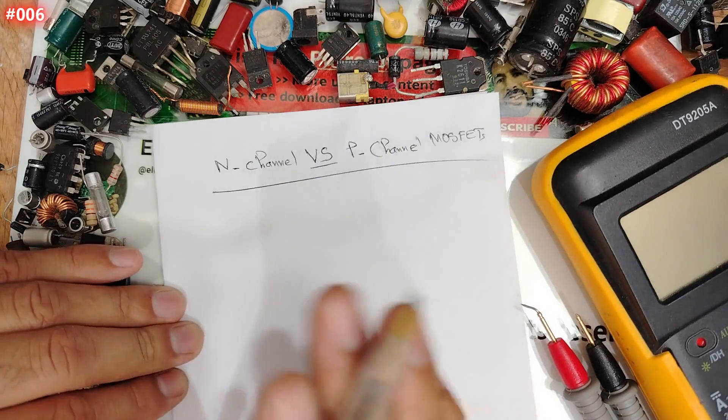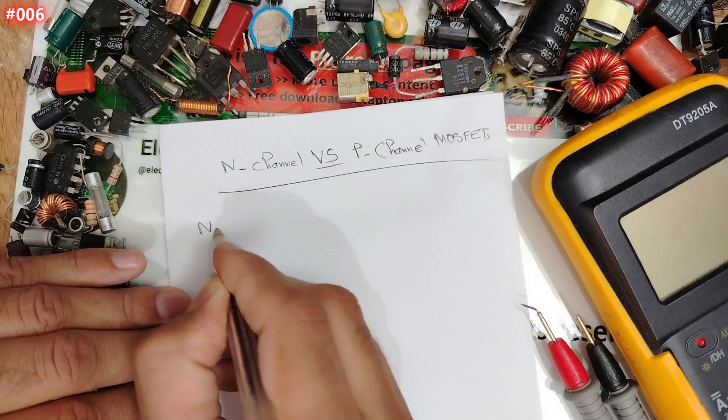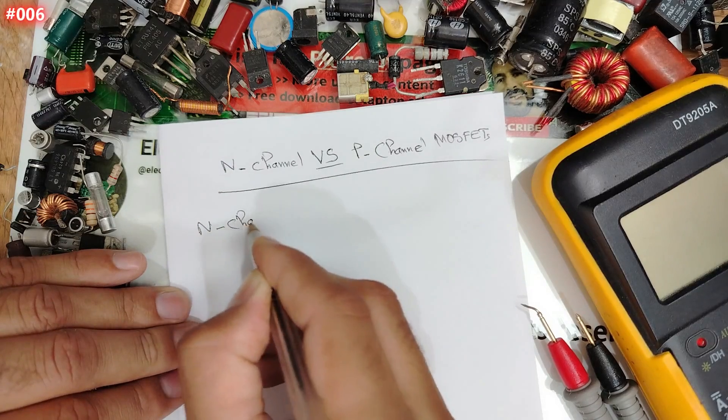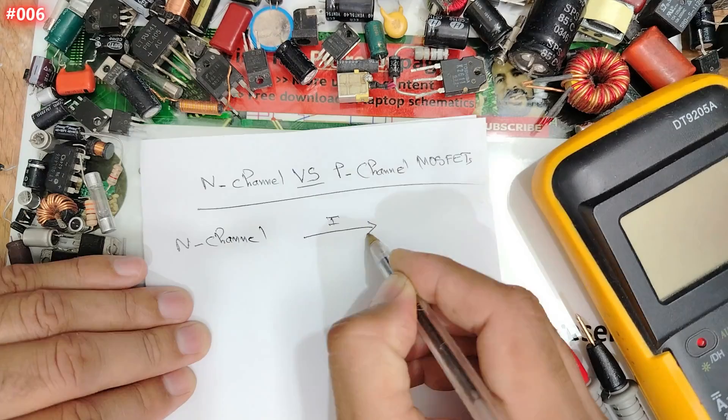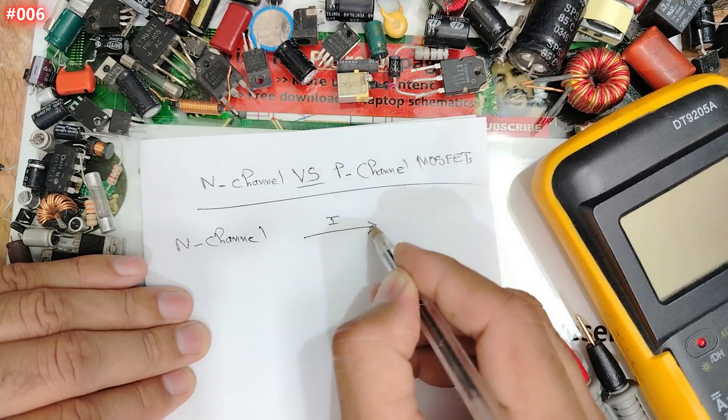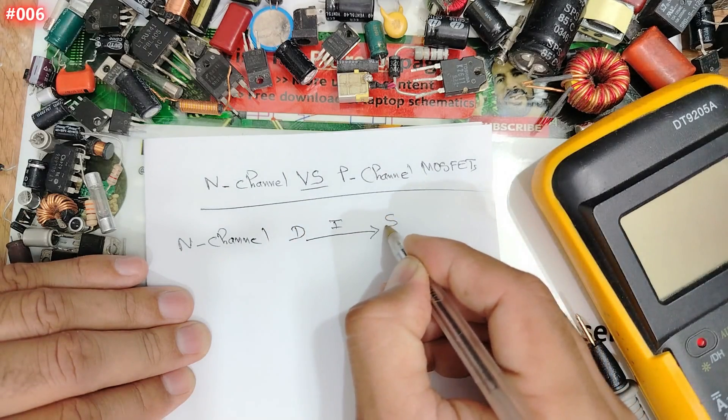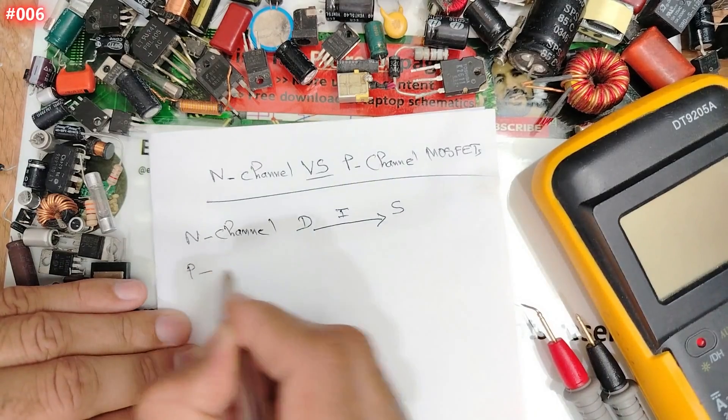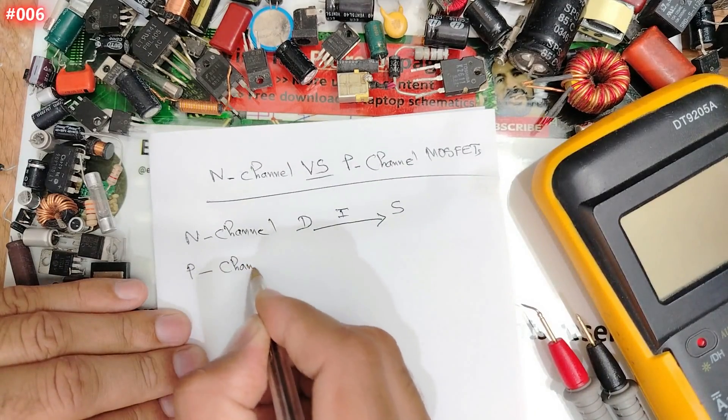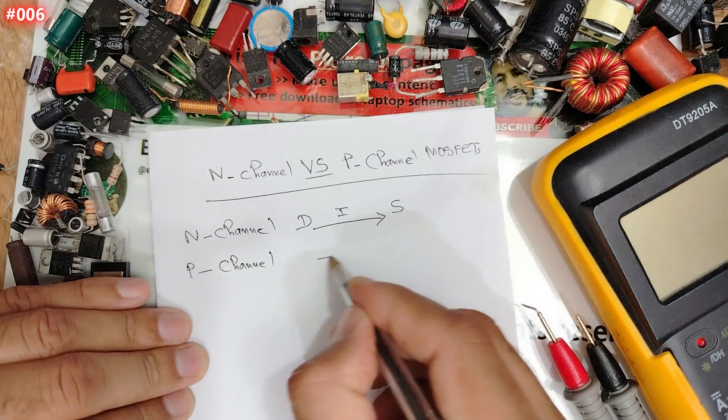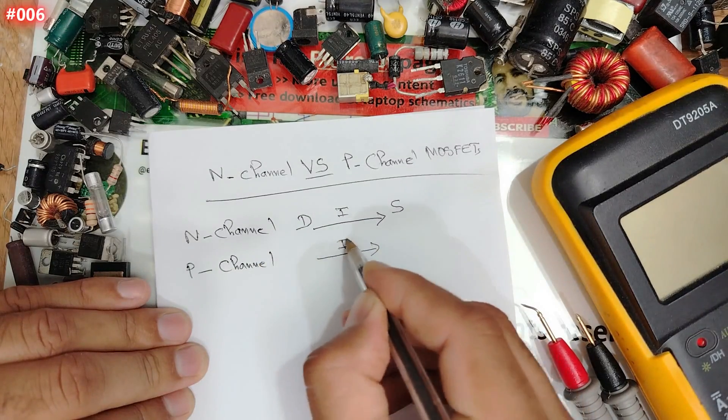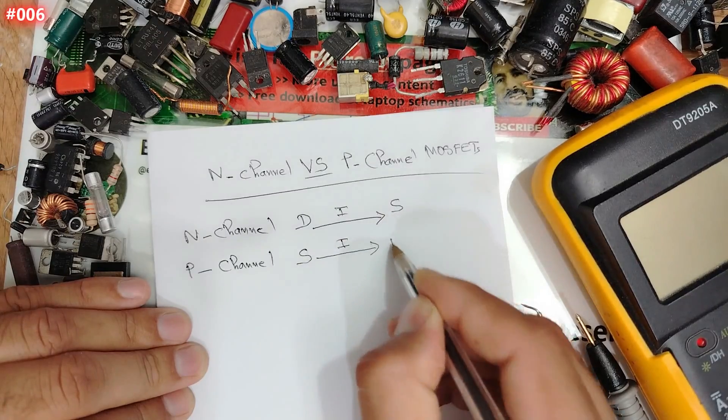Guys, very simple. For N-channel, the current flows from drain, remember, from drain to source. But for P-channel, the current flows from source to drain.